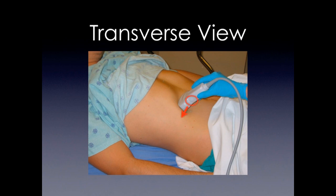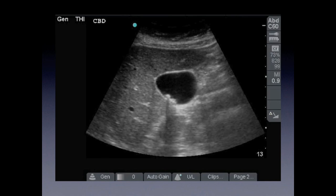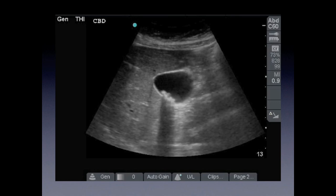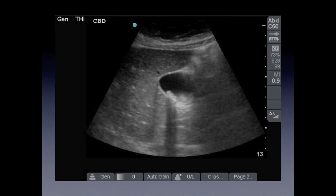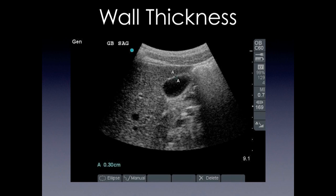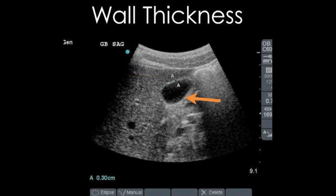Now we're going to switch to the transverse view. You're going to rotate the probe counterclockwise with the indicator towards the patient's right, and you're going to sweep up and down to visualize the transverse view. Here we see the liver, the gallbladder, and some white hyperechoic structures casting a shadow — those are stones. We measure the anterior wall of the gallbladder because if you measure the posterior wall, you can get an artifact called acoustic enhancement, where it looks enlarged but it isn't.